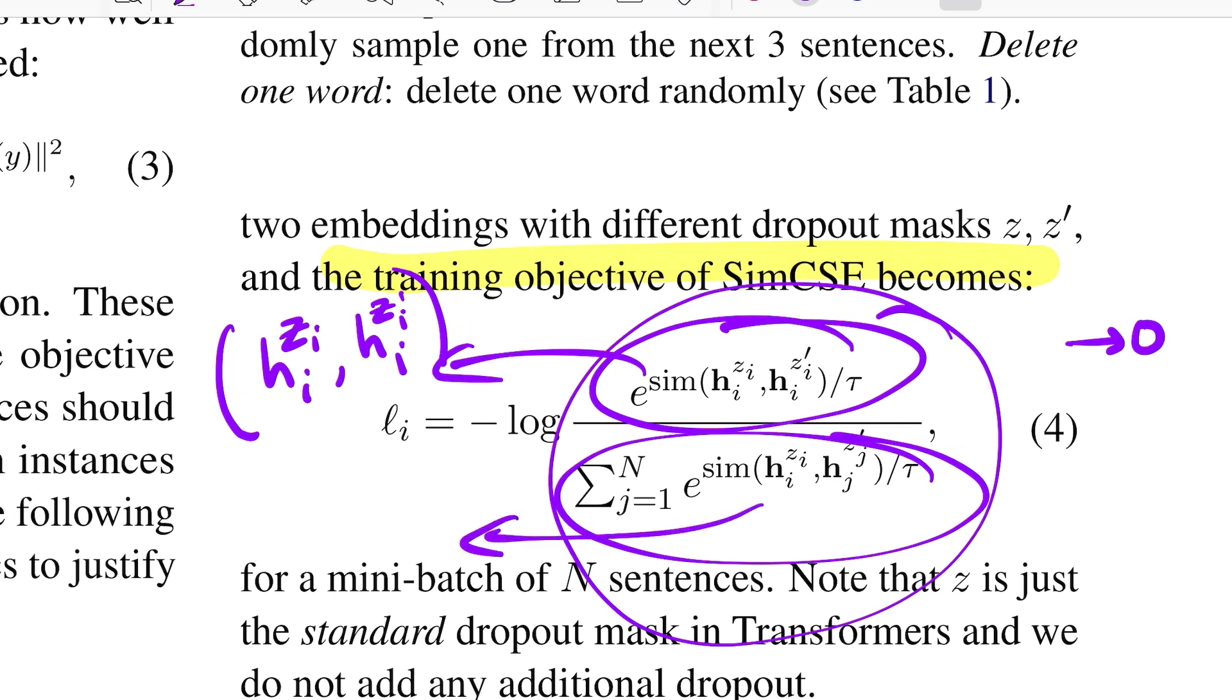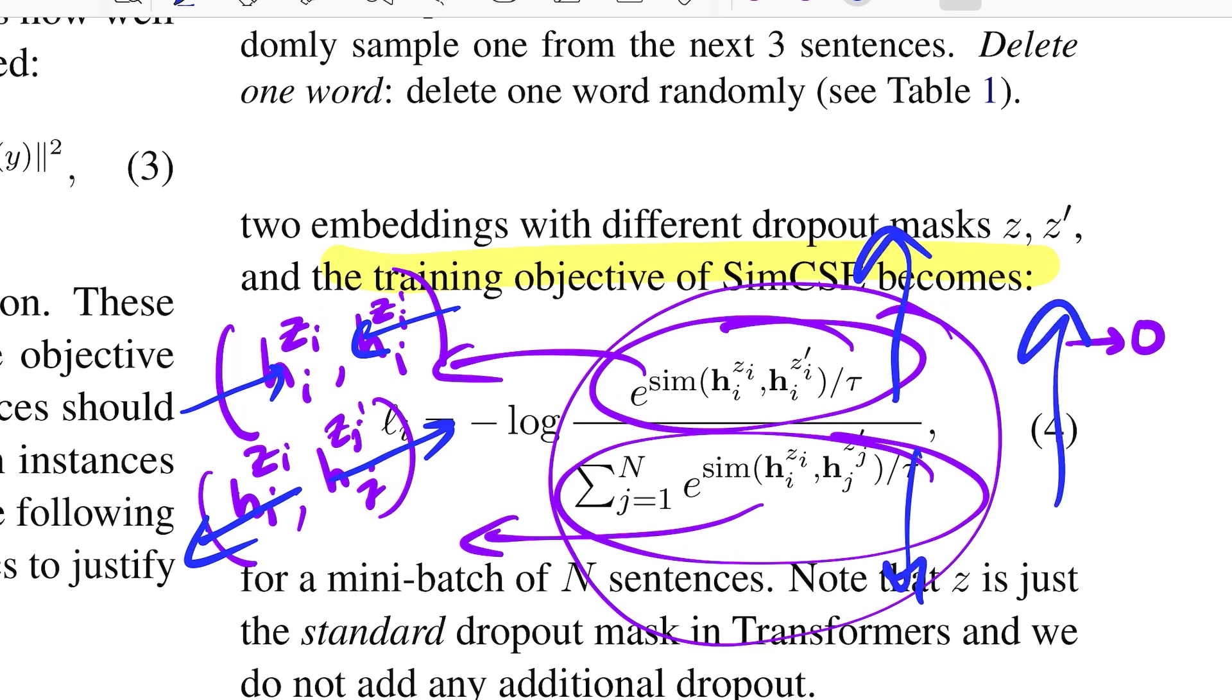Whereas the denominator is about pushing the ith and jth, which means all the remaining elements in the batch a little far away from each other. So that's what is written, which is h_i^z_i, which is a hidden representation of the ith sentence with a z_i mask and the hidden representation of the jth sentence, which is not the same sentence, but the one that's there in the batch with its mask. And this is where you want to push them apart from each other and pull them towards each other. So that way you will have this increasing, this decreasing, this overall increasing and this tending to zero, which is what we want.